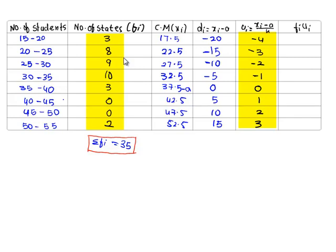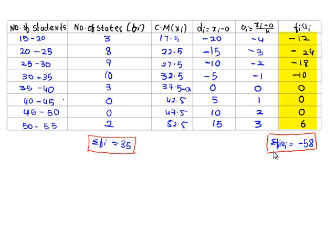As we have simple values now, as xi is reduced to ui, we shall find the product of fi and ui. It's 3 into minus 4, it's minus 12. 8 into minus 3, it's minus 24. And similarly if we do, we get the values as follows. And the sum of the total values of fiui, it is sigma fiui, it's minus 58.